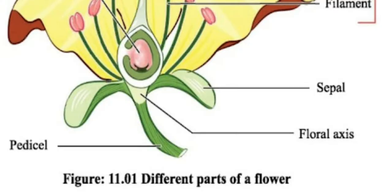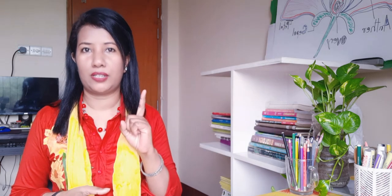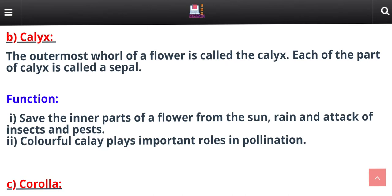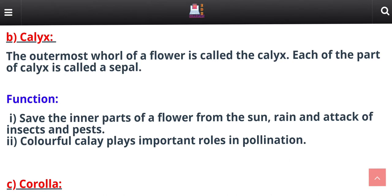What is the function of the calyx? The main function is: if it is green in color, it contains chloroplasts and produces food through photosynthesis. Number two, it saves the inner part of the flower from sun, rain, insects, or pests. It also plays an important role in pollination by attracting animals and insects.